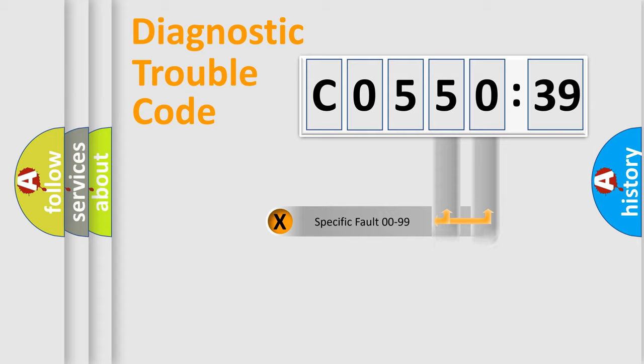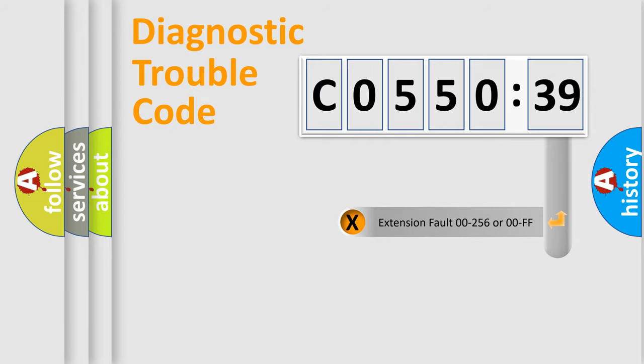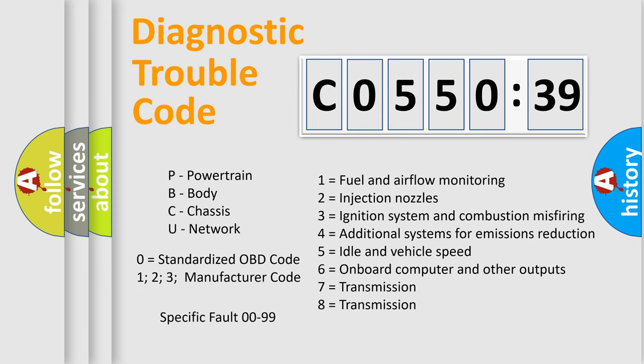Only the last two characters define the specific fault of the group. The add-on to the error code serves to specify the status in more detail, for example, short to the ground. Let's not forget that such a division is valid only if the other character code is expressed by the number zero.